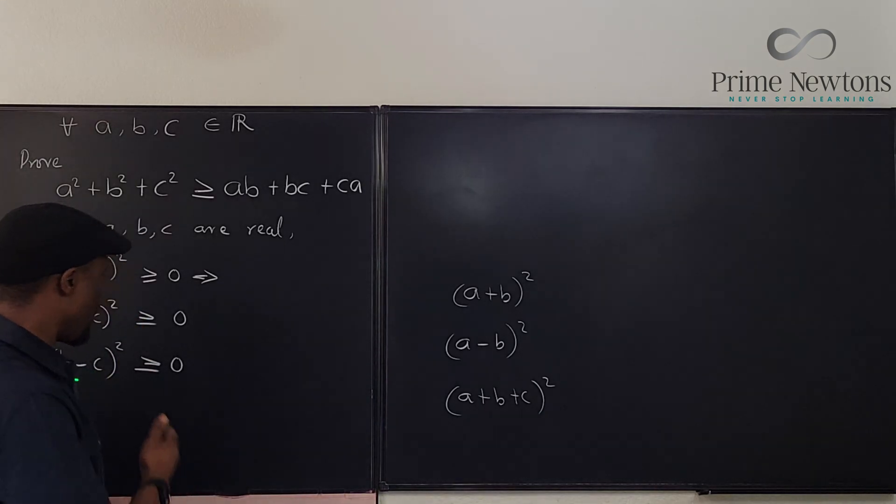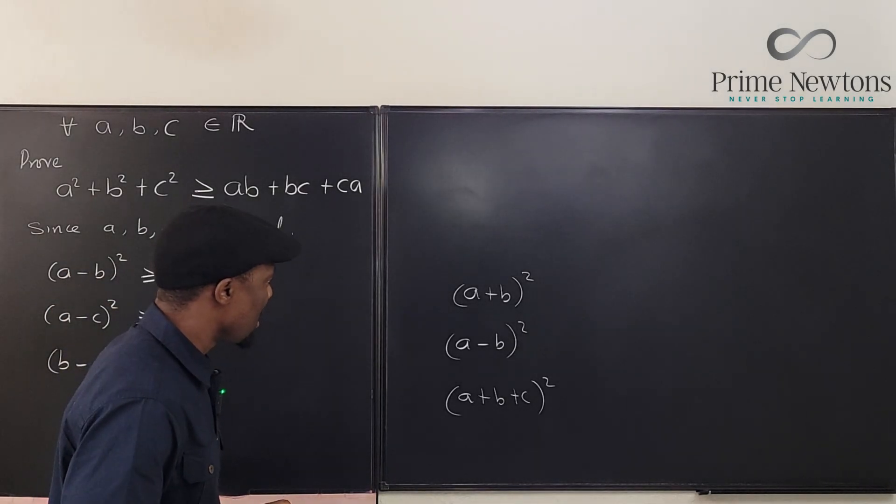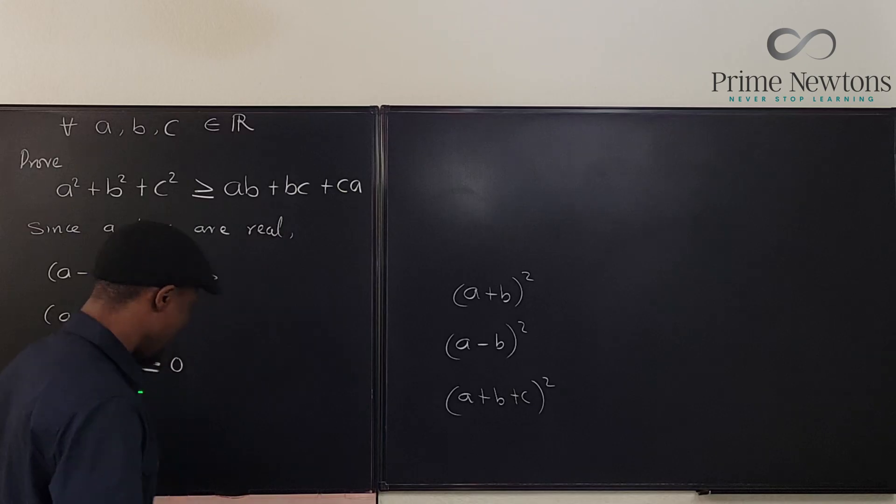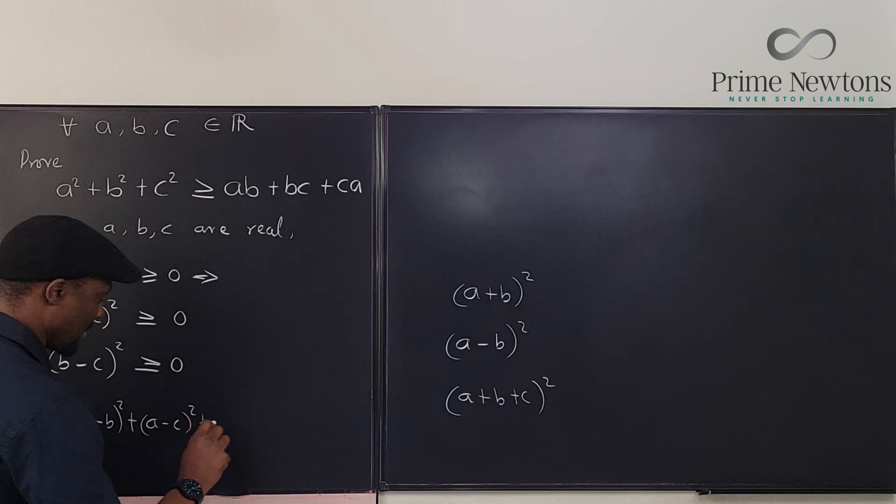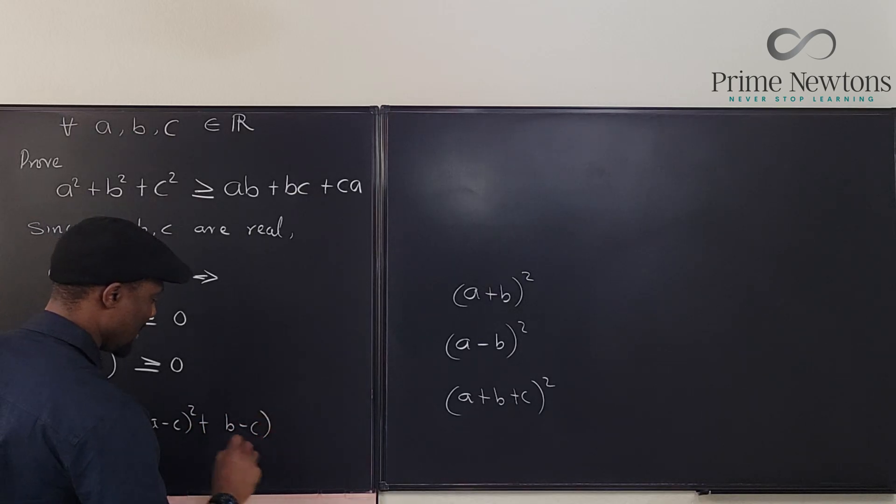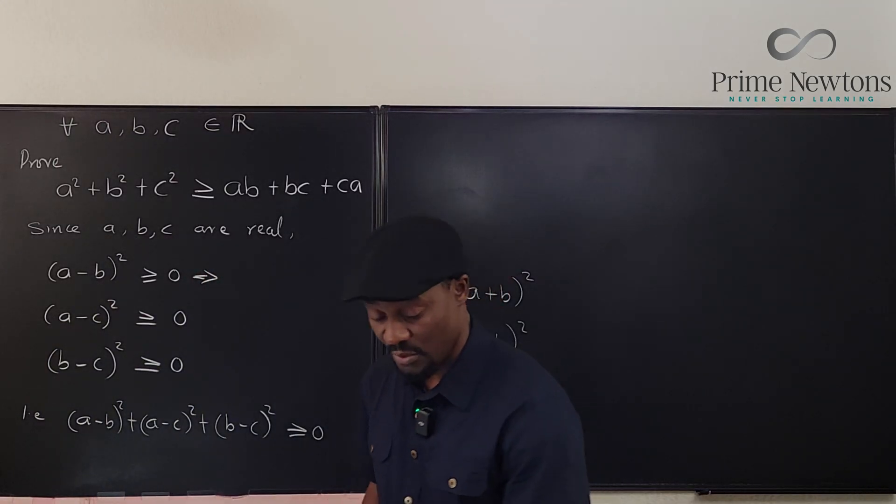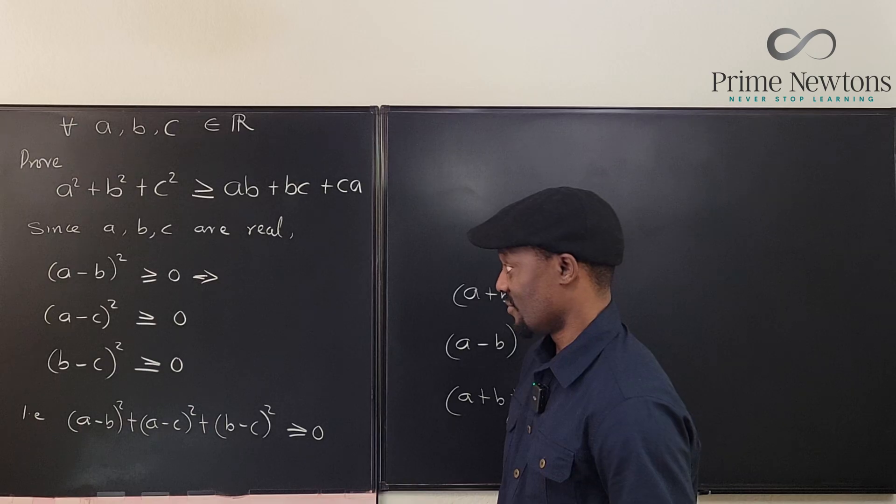A, what is A minus B? So we know all of these are positive. So this is what we have. That is, so we can, if we add up all of these, we have A minus B squared plus A minus C squared plus B minus C squared is greater than or equal to zero. So the sum of all of these squares are greater than or equal to zero.